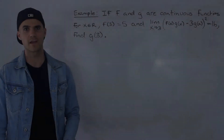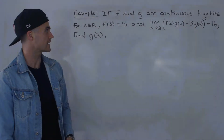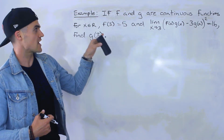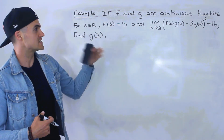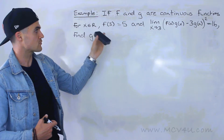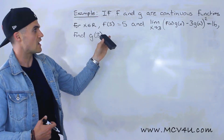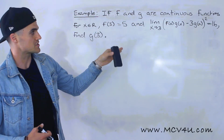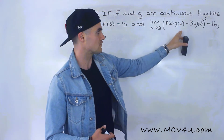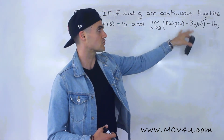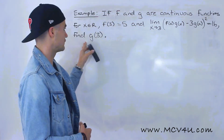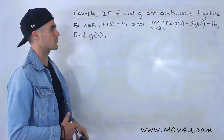Welcome back, everyone. Patrick here. Moving on to the next question, we have an example to do. If functions f and g are continuous functions for x ∈ ℝ, f(3) is equal to 5, and the limit as x approaches 3 of [f(x)·g(x) − 3·g(x)]² is equal to 16, we have to find g(3).